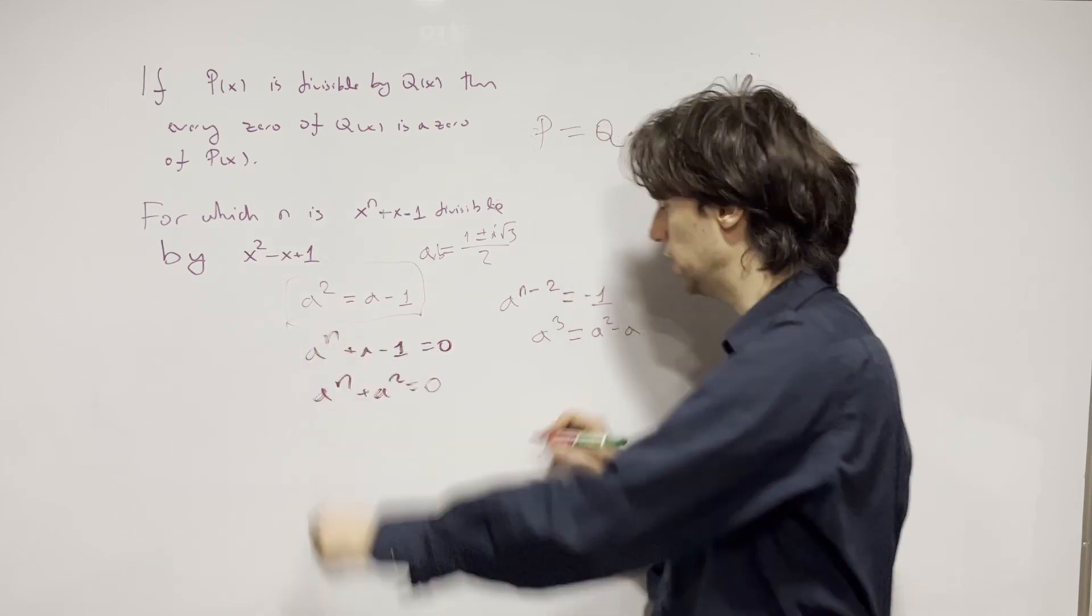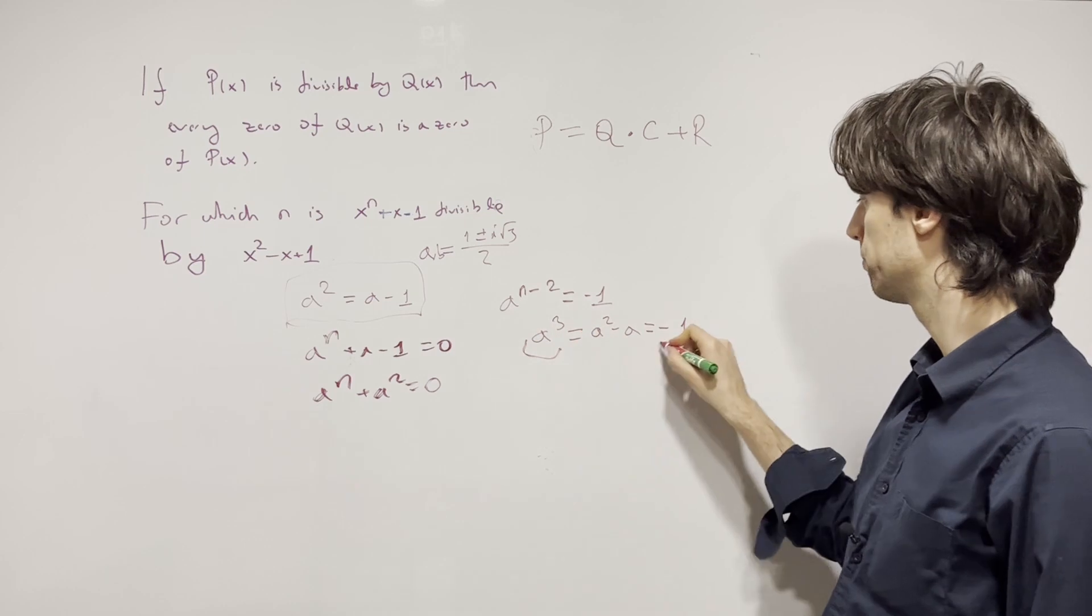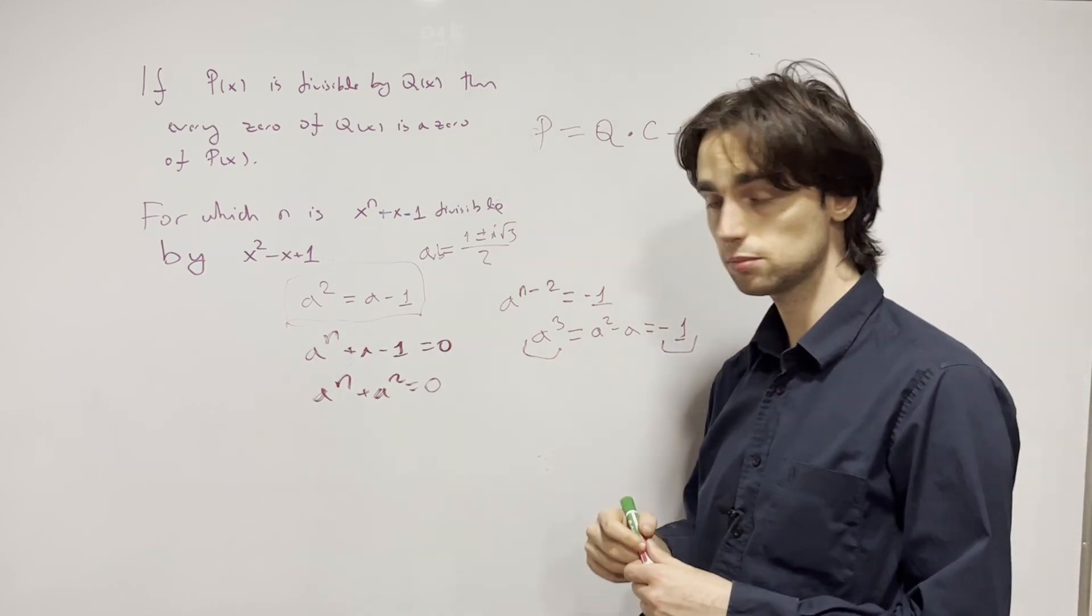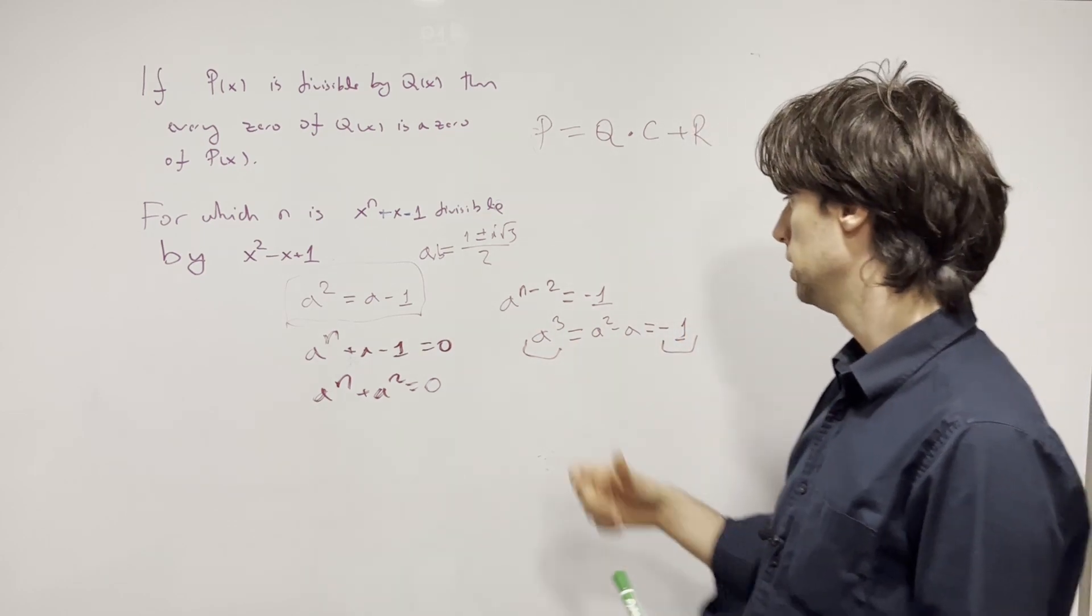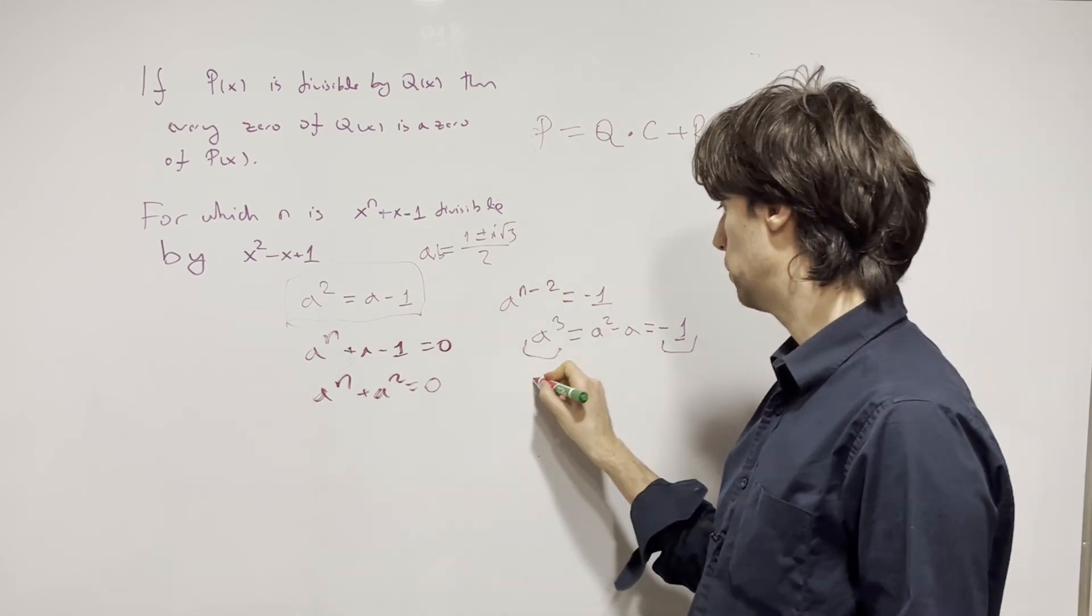Now, what is a squared minus a? Well, when we move a to the other side, we know this is going to leave minus one on this side. So a cubed is minus one.